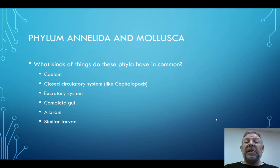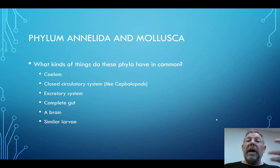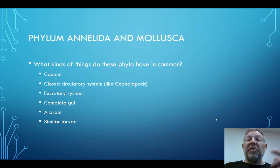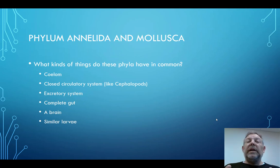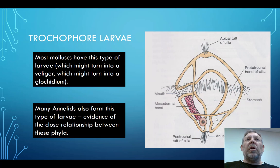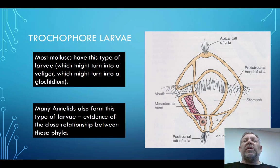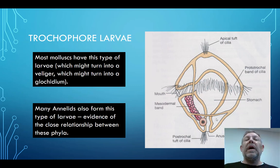We're also seeing a more developed excretory system. The excretory system of the molluscs was more developed relative to earlier organisms, and it's even more developed in the annelids. A complete gut — we saw that for the first time in the molluscs, and again we're seeing it in this group. A brain, so development of the nervous system. One of the things that leads us to believe this group is closely related to the molluscs is that they have similar larvae called the trochophore larvae. Most molluscs have this type of larvae. Last week we talked about veligers and how in mussels, those veligers can turn into glochidia, which go and parasitize fish. But the original larval form looks like this trochophore larvae.